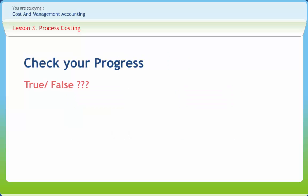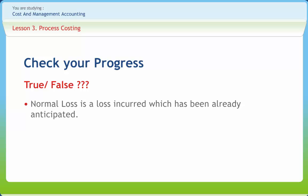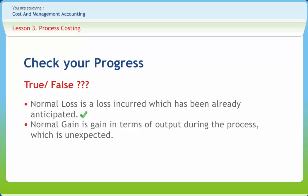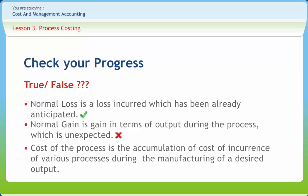Let us check if we have understood the concepts discussed in this lesson. Normal loss is a loss incurred which has been already anticipated — right. Normal gain is a gain in terms of output during the process which is unexpected — wrong. Cost of the process is the accumulation of cost of incurrence of various processes during the manufacturing of a desired output — right.